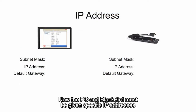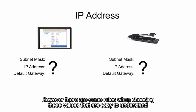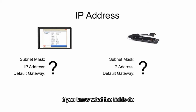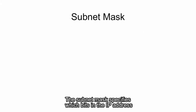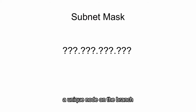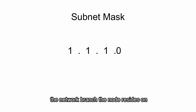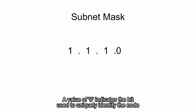Now the PC and Blackbird must be given specific IP addresses, and the Subnet Mask and Default Gateway must be specified manually. There are some rules when choosing these values that are easy to understand if you know what the fields do. The Subnet Mask specifies which bits in the IP address are used for designating a common network branch, and which bits are used to identify a unique node on the branch. A value of 1 in a Subnet Mask bit indicates the bit is used for designating the network branch the node resides on. A value of 0 indicates the bit is used to uniquely identify the node.